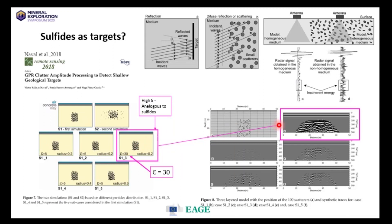Another interesting result from that paper is that if you have a homogeneous medium, the variability in the return signal will be much lower than the return image from a heterogeneous medium that may have sulfides embedded in it. When there are lots of grains and lots of interference, the peaks and troughs are much greater than in a homogeneous medium. Also, radar follows the same rules of reflection and refraction — directing energy toward a high dielectric layer such as massive sulfides may produce some reflection, but very rarely in geology do we get a perfect dielectric mirror.